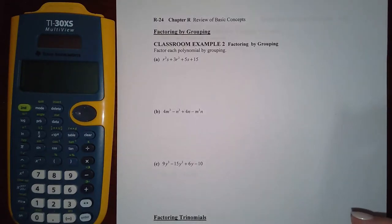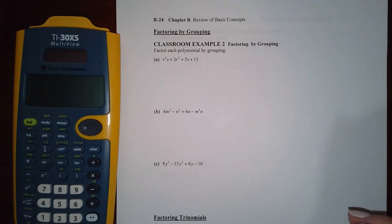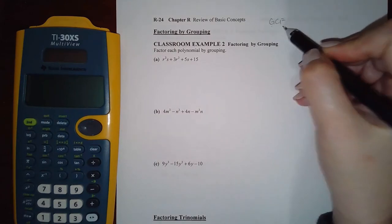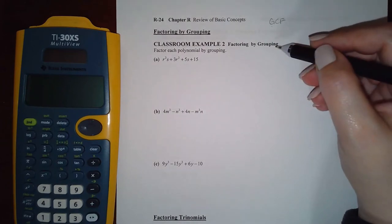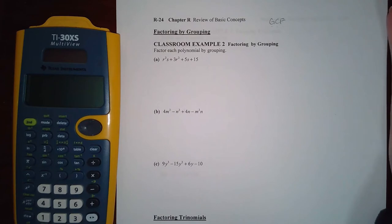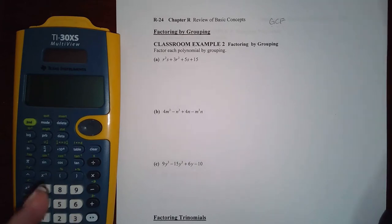We are on to the next concept in this section R4, which is the review of basic concepts, and this section is about factoring. We've already learned how to factor out a greatest common factor, or GCF. Now we're going to use that concept to learn another one called grouping. Whenever you have four terms in your polynomial, you want to attempt to group them into two groups of two, then factor out the GCF of both groups, and then factor out the overall GCF of the entire polynomial.